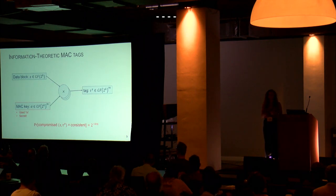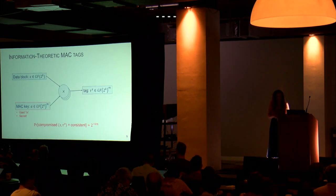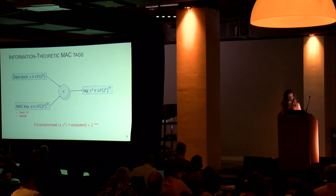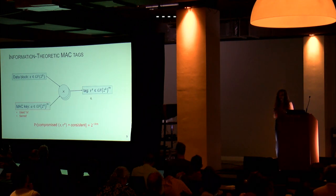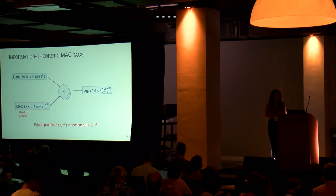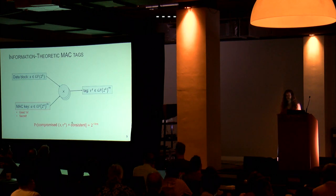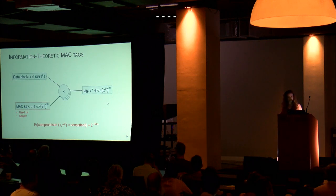What's the redundancy in MnM? We're going to use information-theoretic MAC tags — not cryptographic MACs, but information-theoretic MAC tags. It's very simple: for every data block X, you accompany it with a tag. The tag is simply a Galois field multiplication of the data block X with some key alpha. Alpha has to be secret, and for every new encryption you have to take a new one. The assumption is that if the attacker wants to inject faults and not be detected, he should also inject faults in the tags. Since alpha is secret, the probability that he succeeds in keeping them consistent is like 2 to the minus km, which is based on the size of these tags.